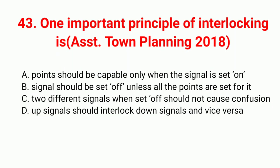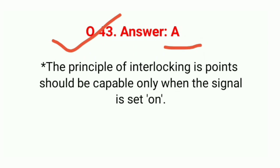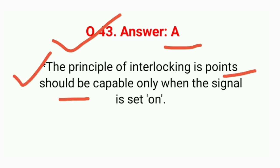Question 43: One important principle of interlocking is — correct answer A: points should be capable of operation only when the signal is set on. The principle of interlocking states that points should be capable of operation only when the signal is set on.